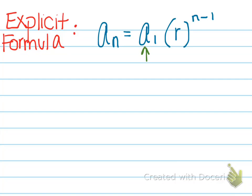Again, a sub 1 is the first term, r is our ratio, and then n represents the term number that you're looking for.